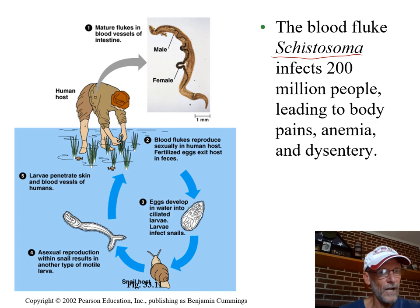Some flatworms are very important globally as disease causers — what we'd call parasites. These include tapeworms and other kinds. Undercooked meat is a good way to pick them up.